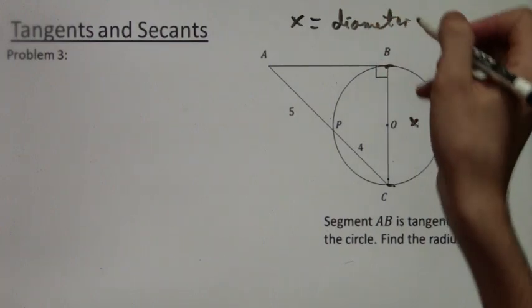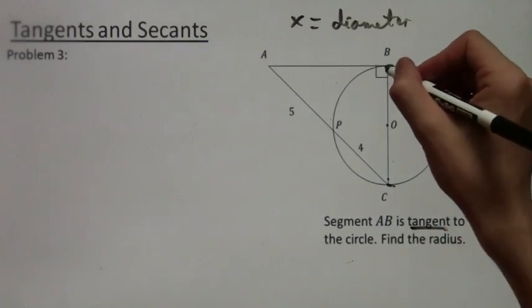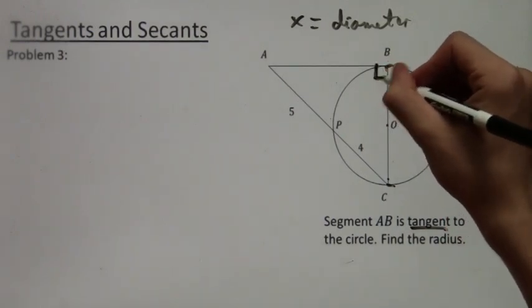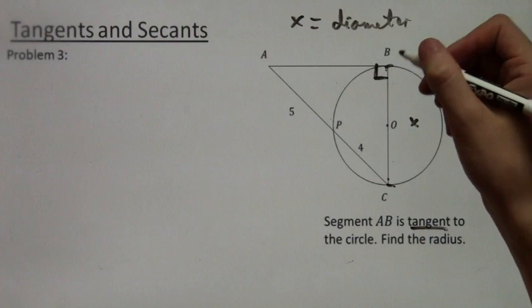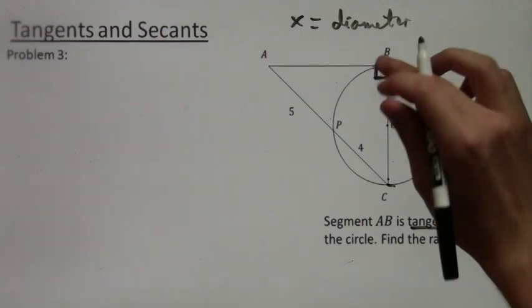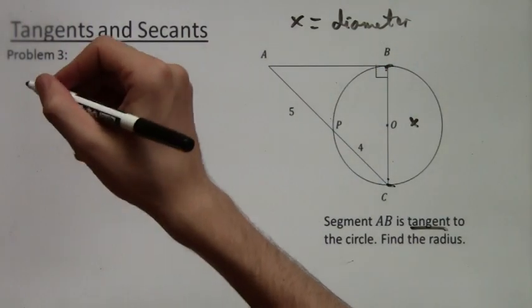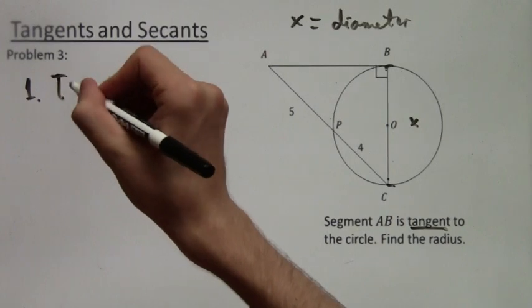But we'll get to that later. And we just label BC as x, and AB is tangent. So that's why this is labeled as 90 degrees. It's in a different video lesson, but I explained that the tangent line is perpendicular to the radius. So here it's just given in the problem, but it's actually just the true fact.